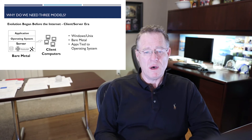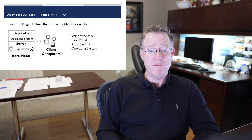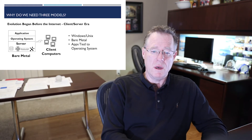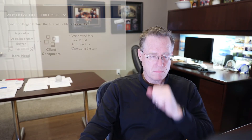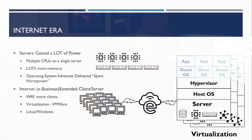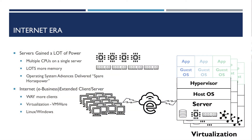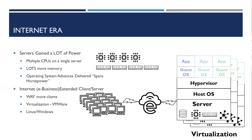Client-server computing can be thought of as a slight advance from traditional mainframe computing, where client computers would run a much improved graphical user interface. During the internet era, virtualization was ushered in — or rather reintroduced, because it was actually around long before on IBM mainframes. Distributed computing needed to take advantage of the spare horsepower delivered on new servers that came with multiple processors and much more memory, and they had that virtualization and isolation problem to solve.